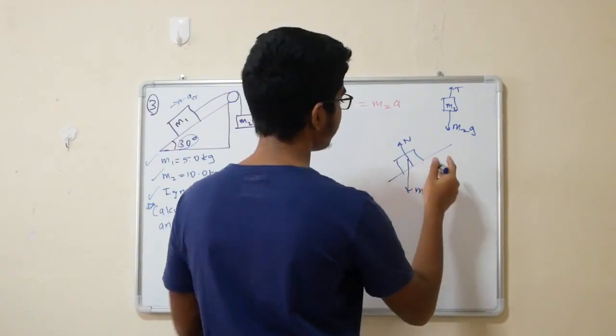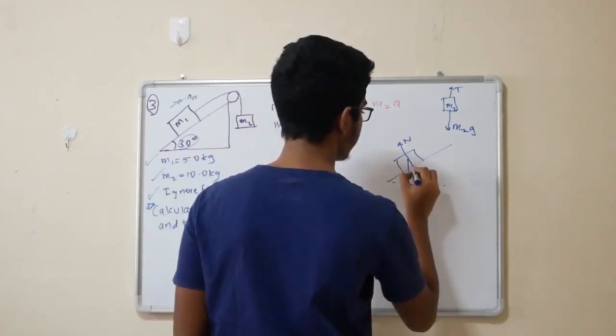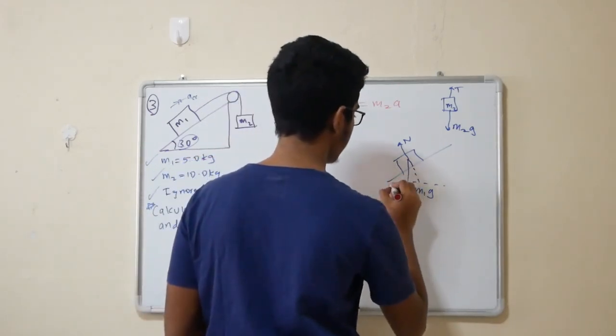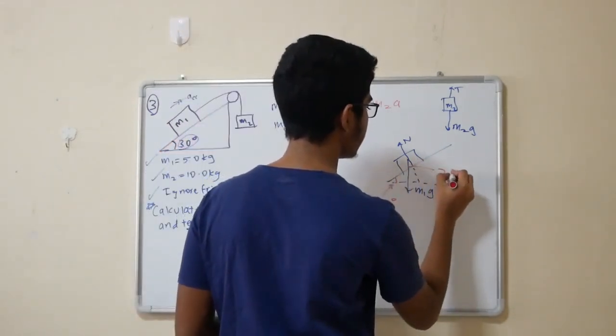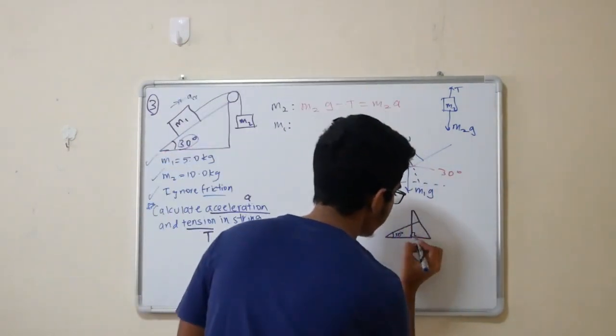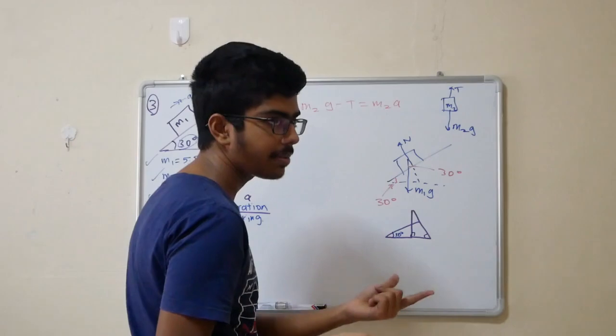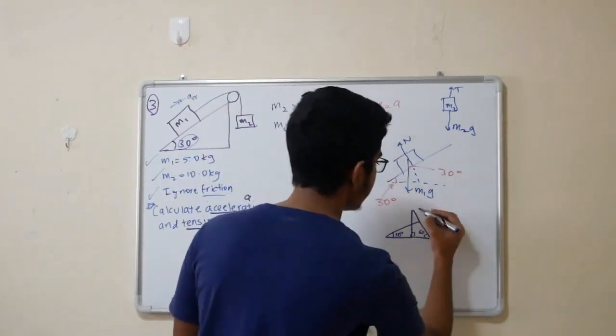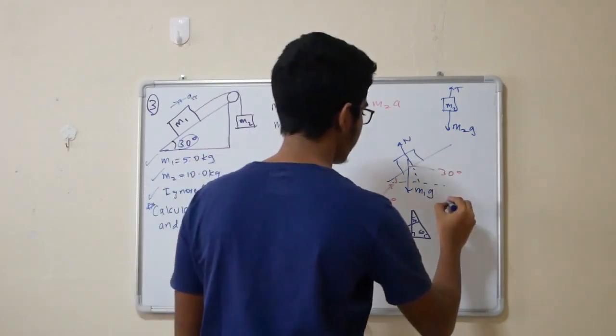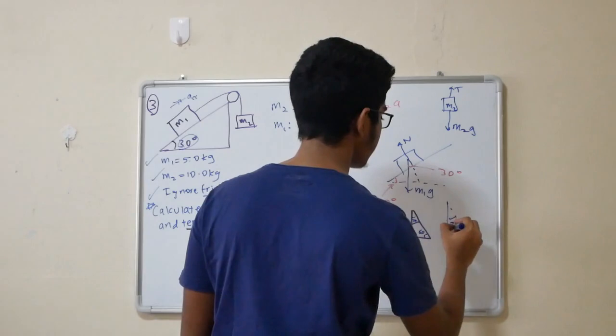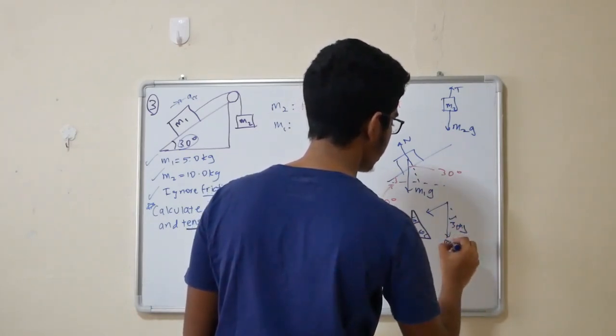The component of the weight parallel to the slope is m1g sin theta. Let me show you. This angle here is 30 degrees. Then why is this angle here also equal to 30 degrees? Let's take it step by step. This angle right here is 90 degrees. This angle is what? 30, 90. So, 180 minus 30 minus 90 is 60 degrees. This is 60. This is 90. This gives you 30. So, this is 30. This angle is 30 degrees.